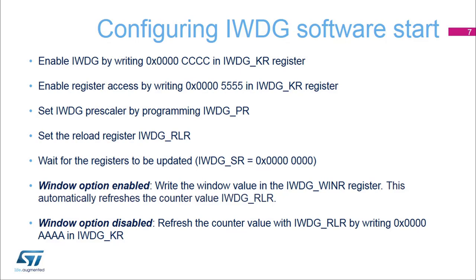After accessing the previous registers, it is necessary to wait for the IWDG SR bits to be reset in order to confirm that the registers have been updated. Two options are now available: enable or disable the IWDG window option. To enable the window option, write the window value in the IWDG WINR register. Otherwise, refresh the counter by writing 0x0000AAAA in the key register to disable the window option.